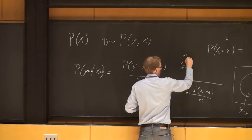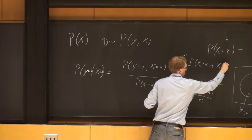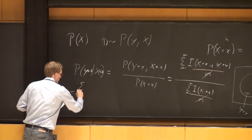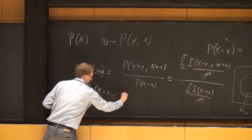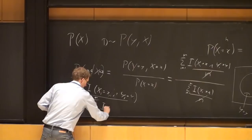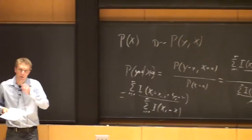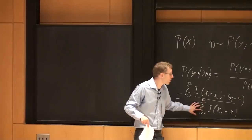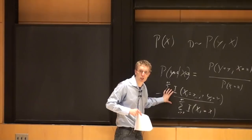These two terms are both solvable. The denominator is the sum over i of the indicator that x_i equals x, divided by n — exactly what we had before. The numerator has two conditions: the indicator that x_i equals x AND y_i equals y, divided by n. The two n's cancel, and what we get is: sum of indicators for (x_i = x AND y_i = y) divided by the total number of points where x_i = x. Given that you see x equals x, this ratio gives you the probability of y.